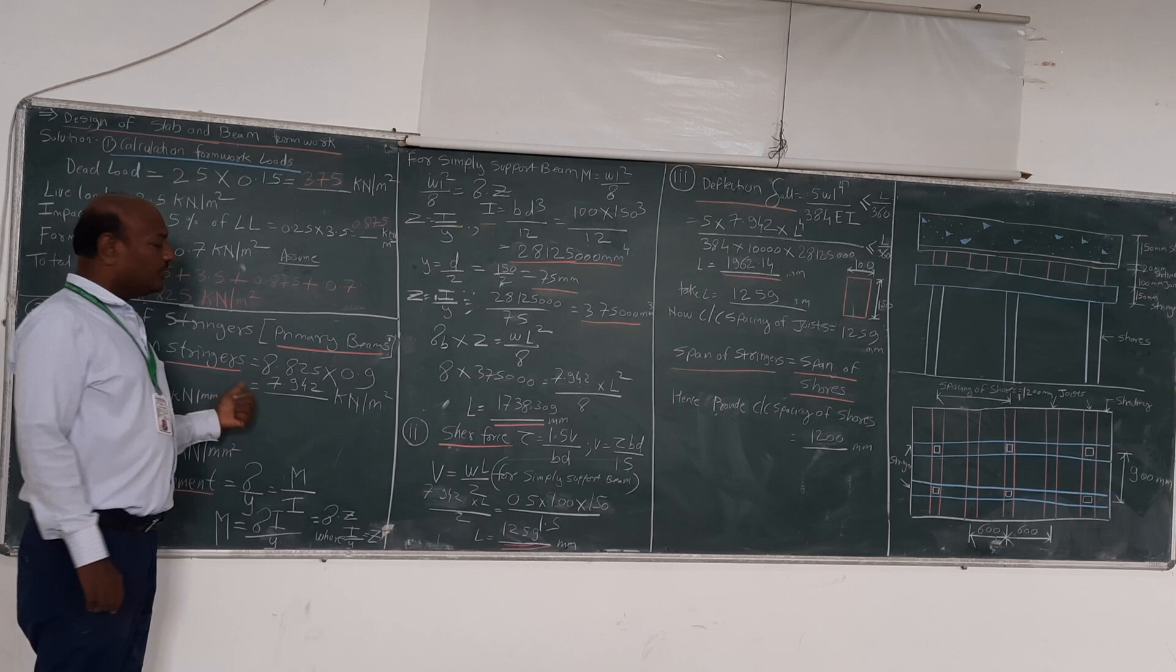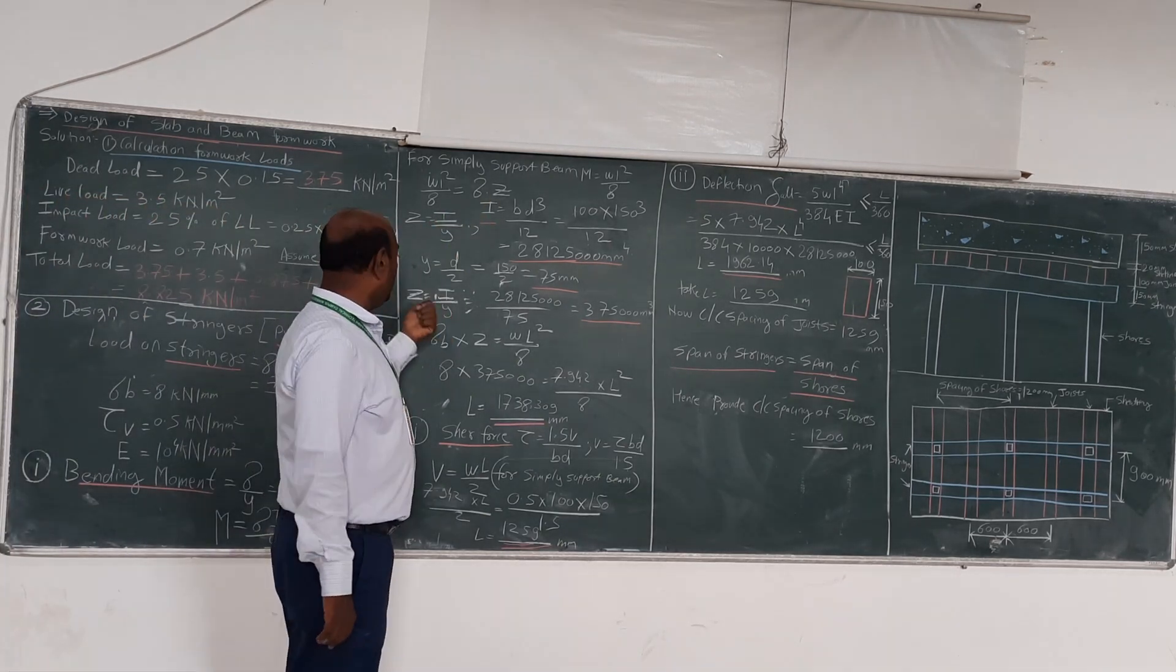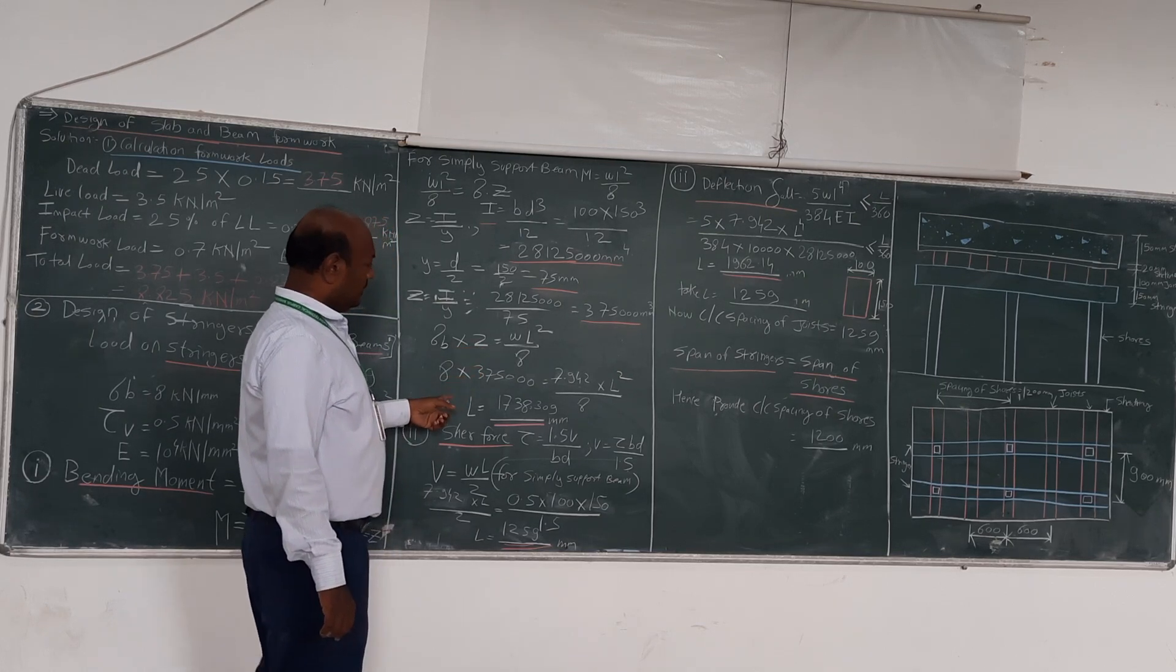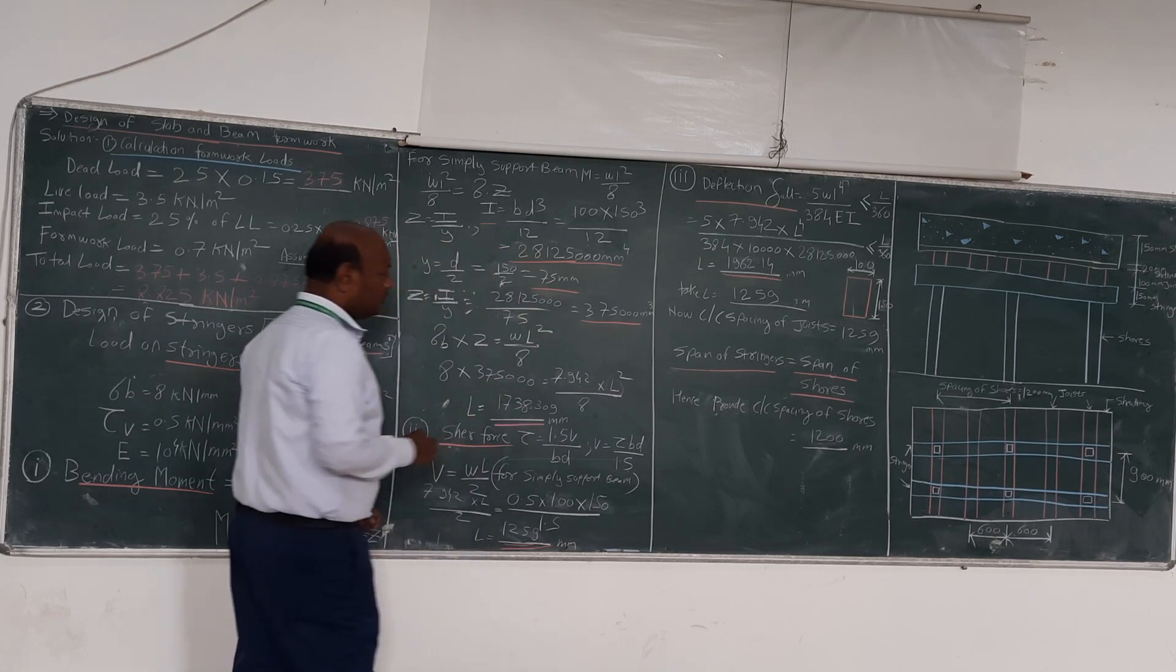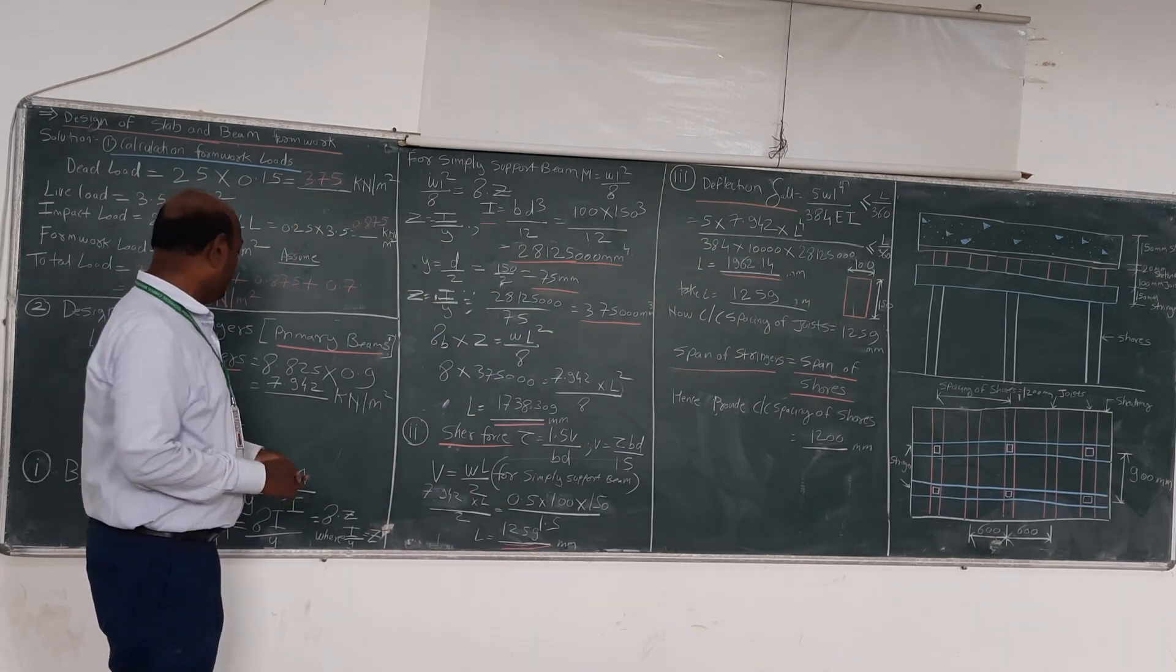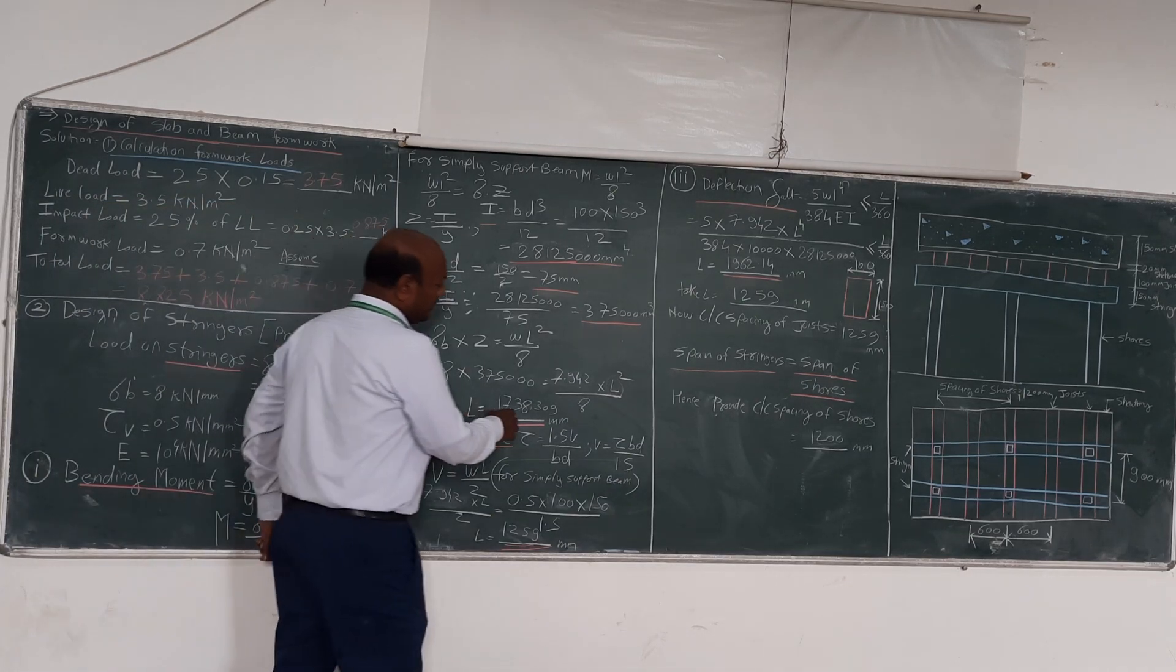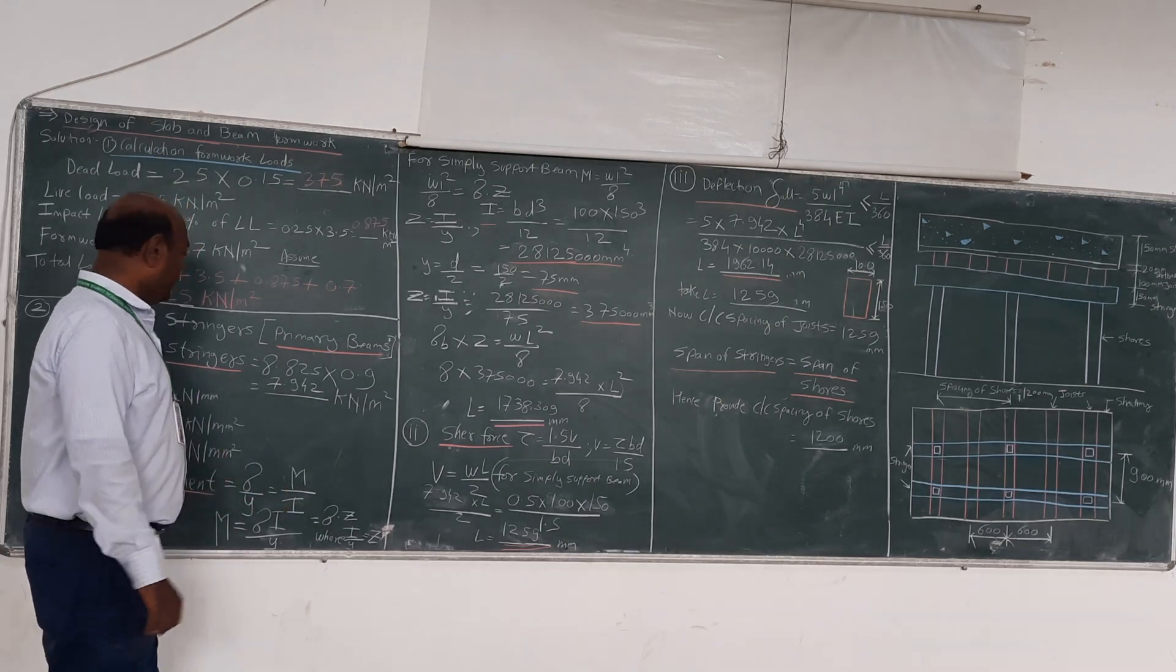We have calculated w, and Z we have calculated here. So we will put this in the formula. Here the unknown is only L. So here we will find out L by using this formula, the bending moment. How much we are getting is 2378.305 mm by using the bending moment formula.